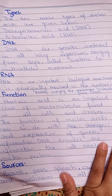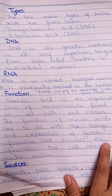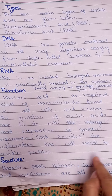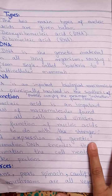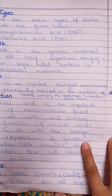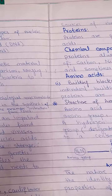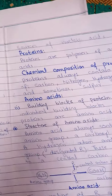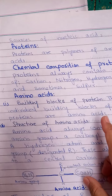What are the sources of nucleic acid? These include vegetables such as beans, peas, spinach, cauliflower, and mushrooms — all of which provide protein. Protein synthesis is important, and consuming these foods supports that process.